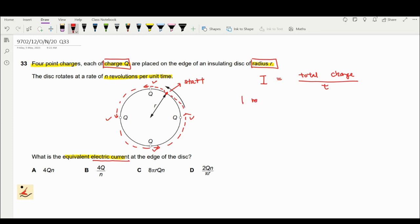So for one revolution, the total charge will be equal to 4Q. This is the first step that you should do for this question.